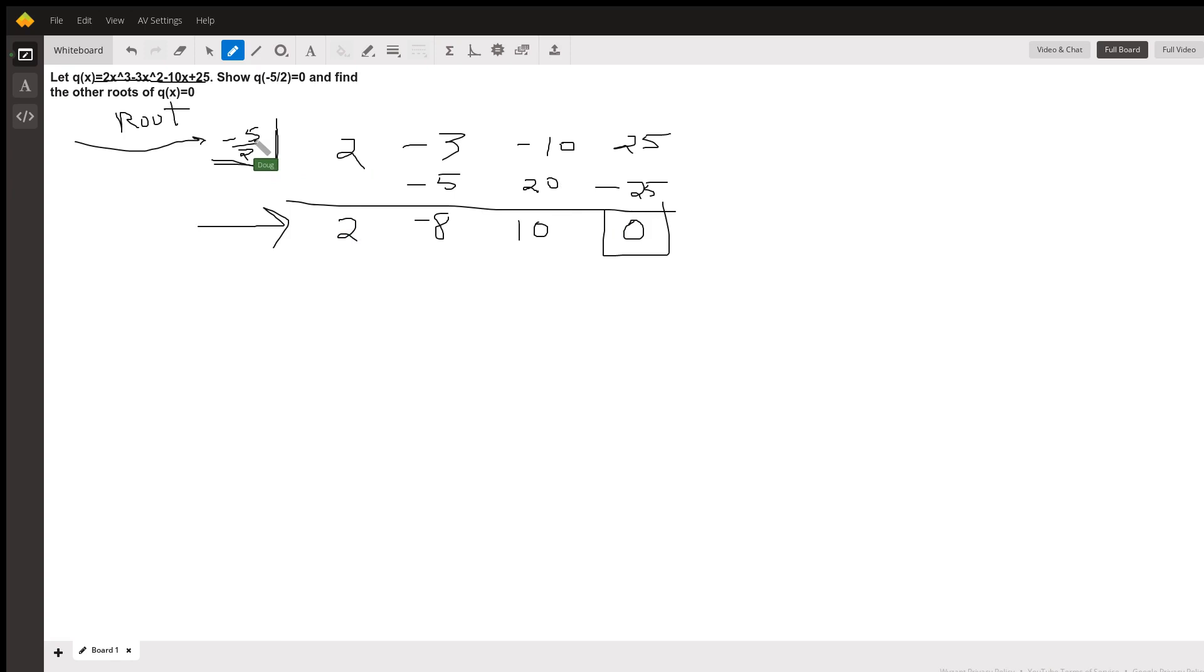So negative five halves times two, the twos cancel out, you get a negative five, add, you get a negative eight. Negative five halves times negative eight, two goes into negative eight, negative four, negative four times negative five is 20. And I think you can see the pattern.